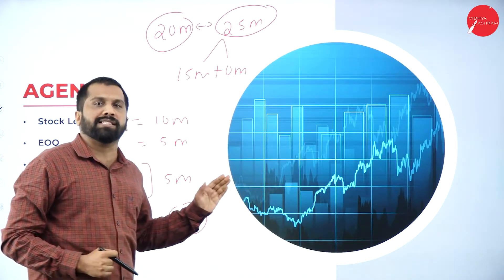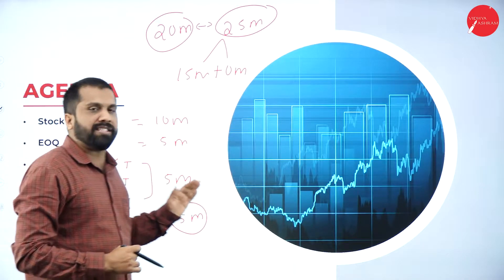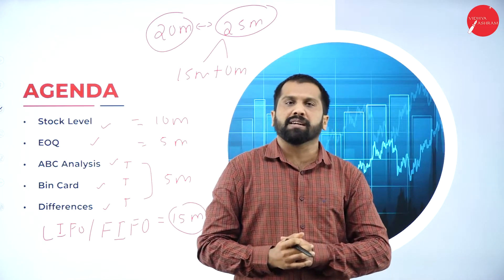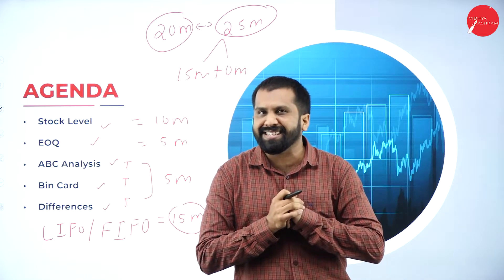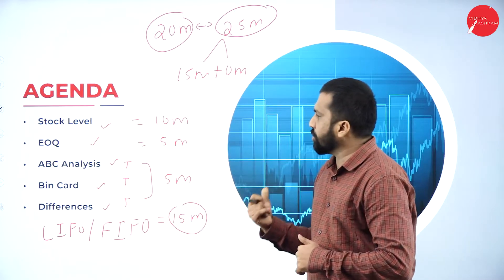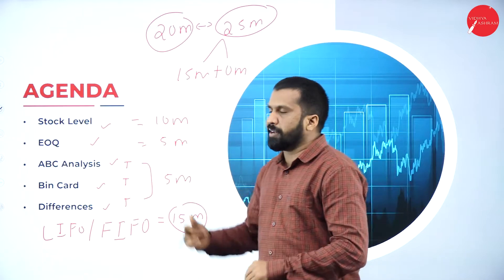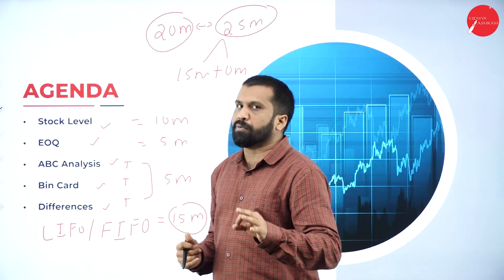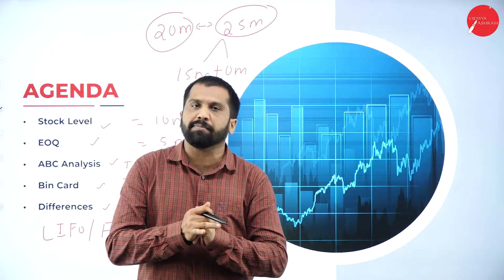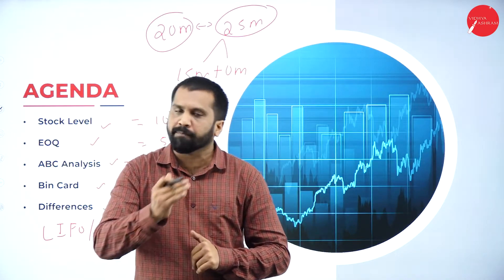How long do we take to complete this unit? Maximum 7 to 8 sessions. It is not difficult — it is the easiest part in your syllabus. In stock level, you only need to learn the formulas. I will explain what is stock level, what is ABC, what is BIN card — everything one by one.